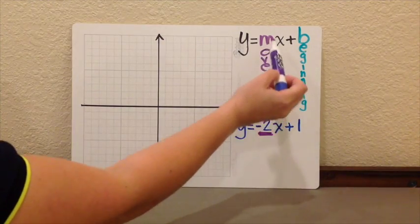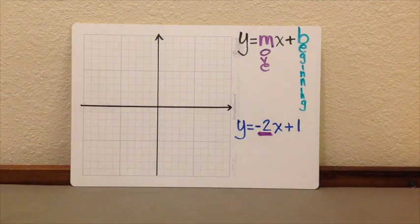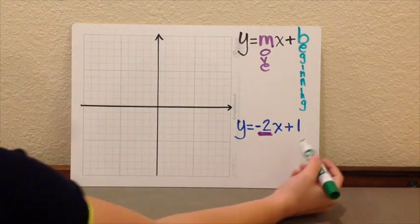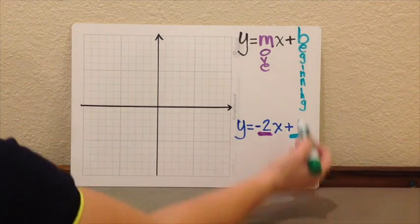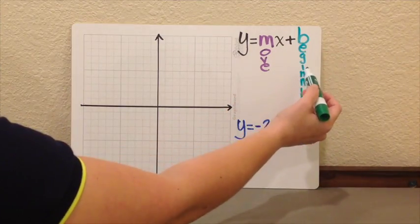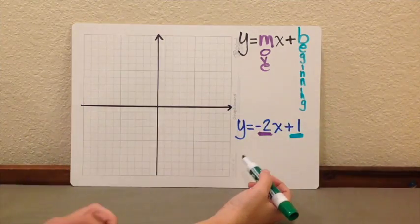And then I have a plus 1, which if I compare it to my form, this is my y-intercept, or the beginning of my line.